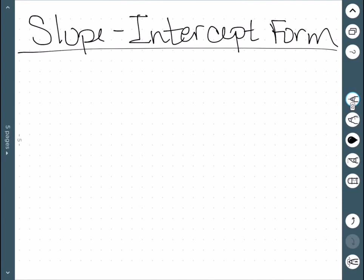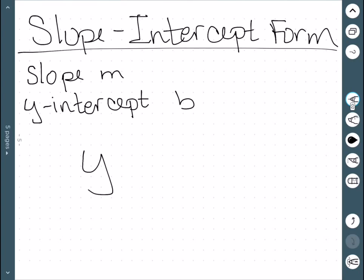Next, we'll look at slope-intercept form. This is the second equation for a line. Here, we need two things: a slope, which we'll call m, and the y-intercept, which we'll call b. Slope-intercept form is given by y = mx + b.